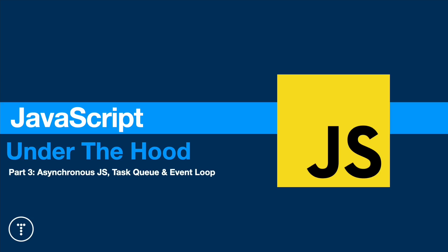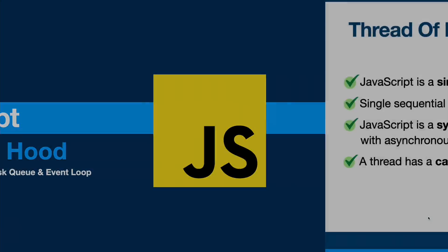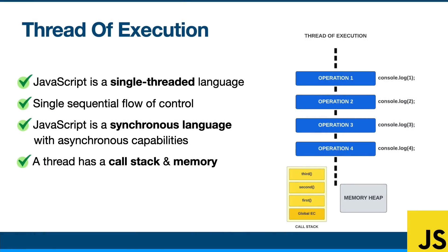Before we start to talk about asynchronous JavaScript, I just want to go back to one of the slides — I think we talked about this in the first video. It's just how JavaScript works at its core. We have this single thread and everything on this thread happens line by line. Operation one completes, operation two waits for operation one to be done, then that runs and so on. And then we have our call stack, which manages our functions and execution context.